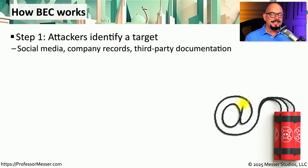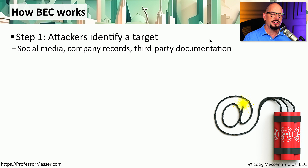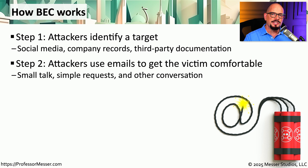Very often, this type of attack is successful because the attacker spends a lot of time planning out this attack and orchestrating exactly what they plan on doing. In the first step, the attacker is going to identify the target they're going to use. They might use company information or social media details to identify an individual within the organization that they can use for this business email compromise. In many of these instances, the attacker is becoming more familiar with the end user by sending messages pretending to be someone who could be trusted.